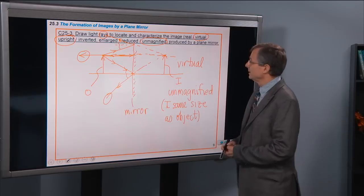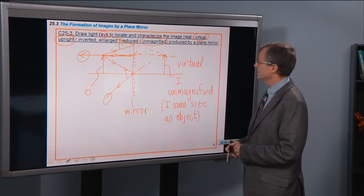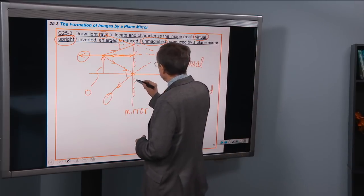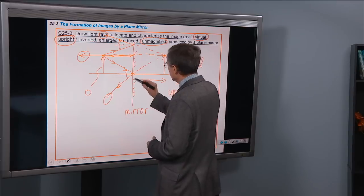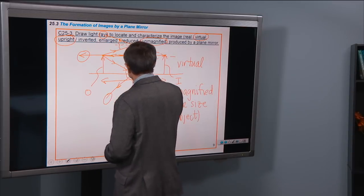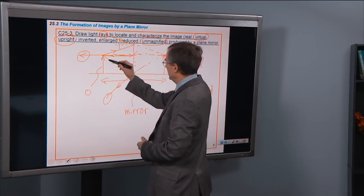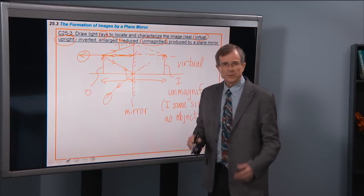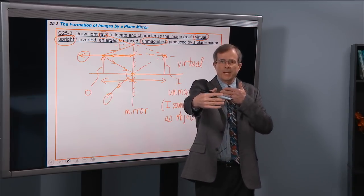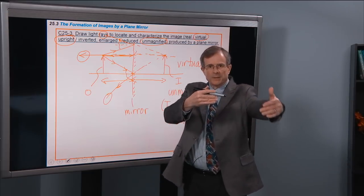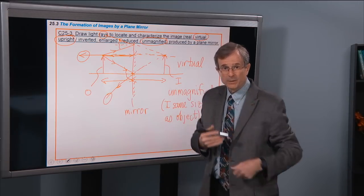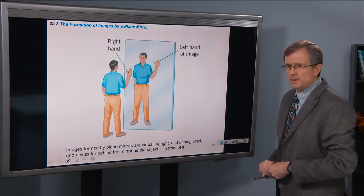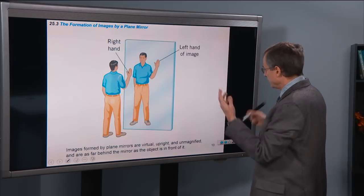Flat plane mirrors form images that are virtual, upright, and unmagnified, with the distance to the image being the same as the distance to the object — by similar triangles, those two distances have to be the same. So when you look in a mirror, if the mirror is this far away, your image will appear to be that same distance behind the mirror.